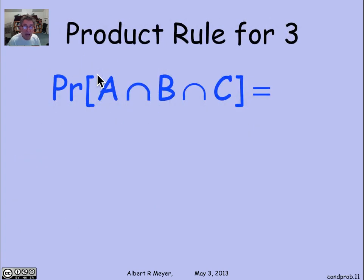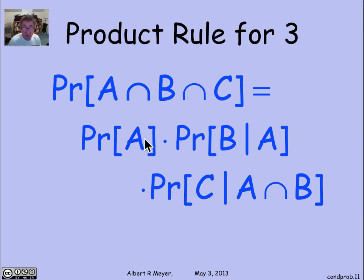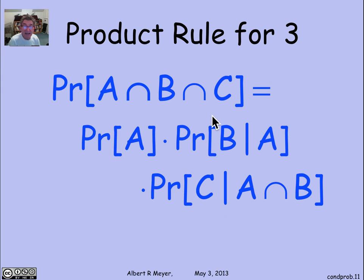If you have a tree of depth three, you need a product rule for three consecutive choices. It generalizes straightforwardly: P(A ∩ B ∩ C) = P(A) × P(B|A) × P(C|A ∩ B). The first branch is A, the second branch is B given A, and the third branch is C given A and B. This product rule for three can be proved by substitution using the product rule for two twice, and of course it generalizes to any finite number of sets.